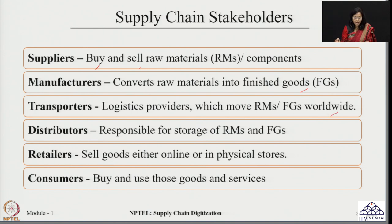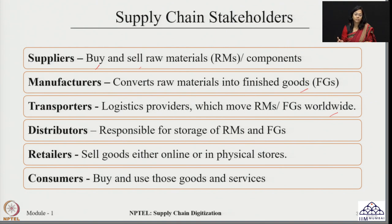The distributors play a critical role because they are responsible for the storage of raw materials and finished goods. Depending upon the production cycles or the schedule, the raw materials are consumed in the manufacturing environment, and depending upon the demands to be fulfilled, these finished goods are moved from the distributors to the next stage in the supply chain via the transporters. The retailers are closely linked with the customers and are responsible for selling the finished goods either in online or physical stores.